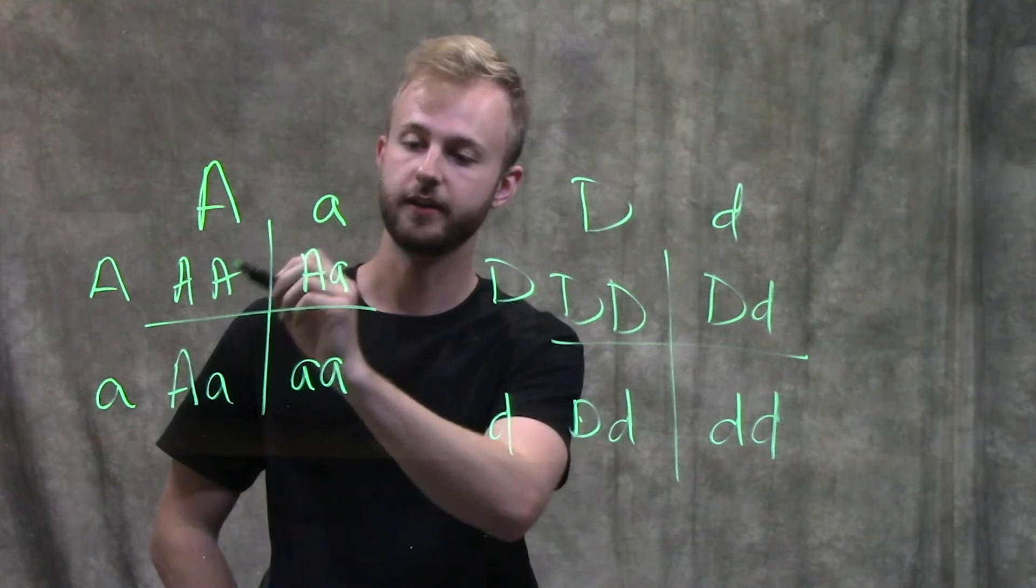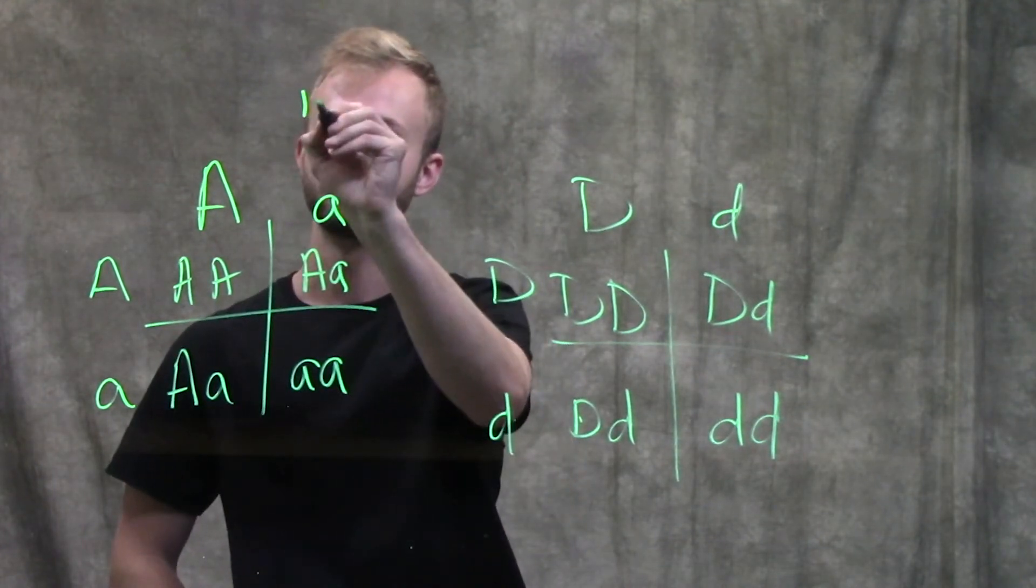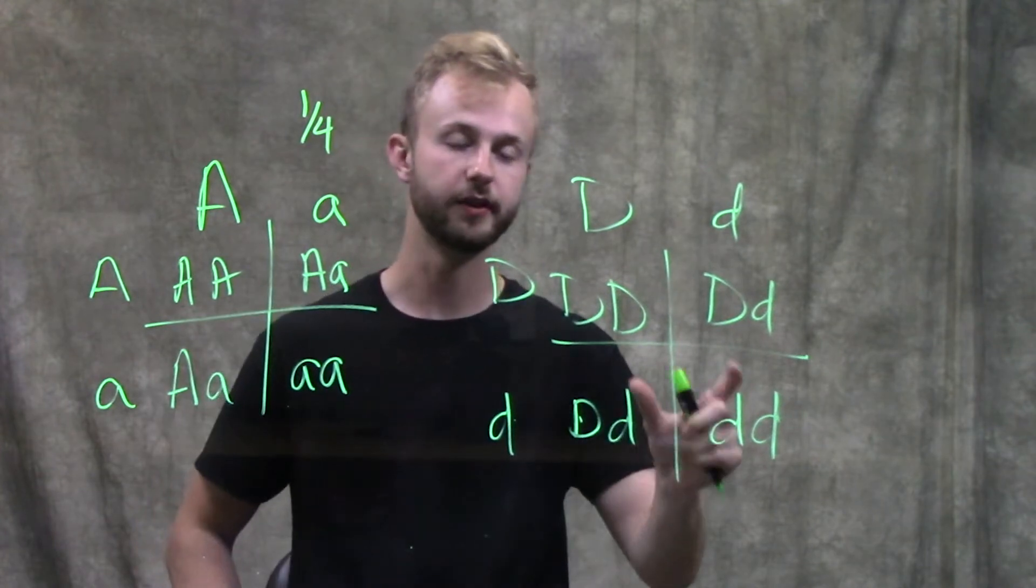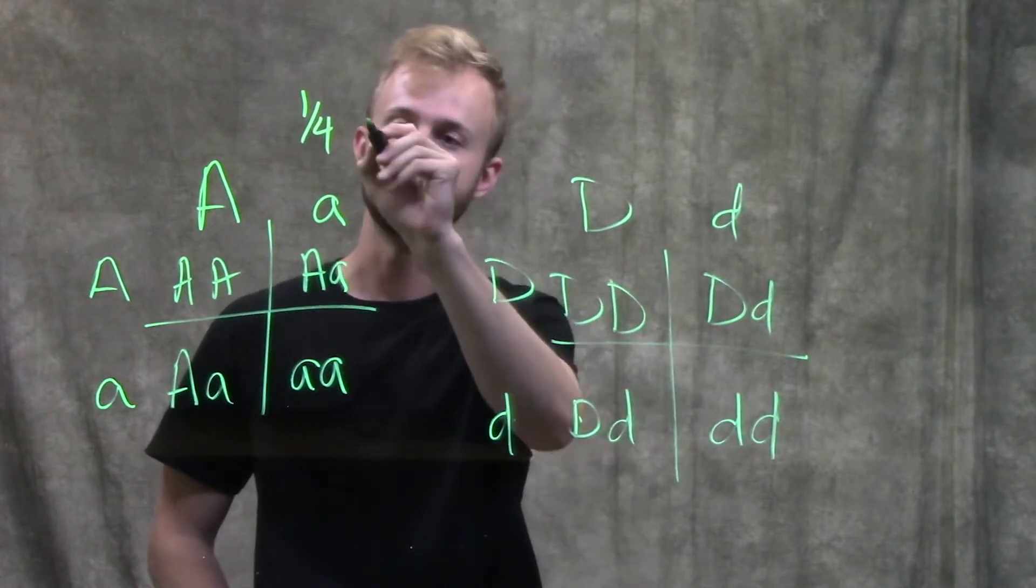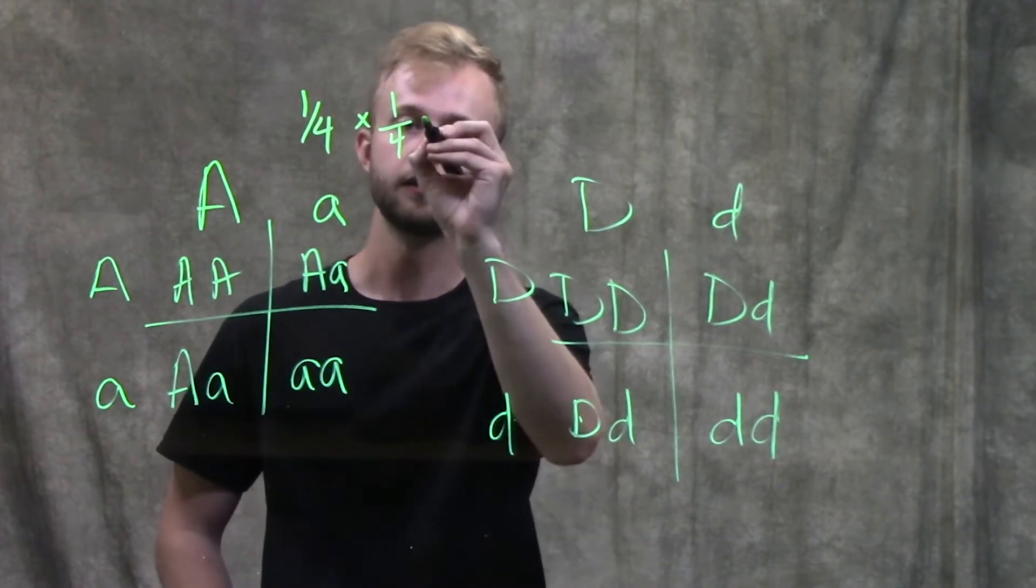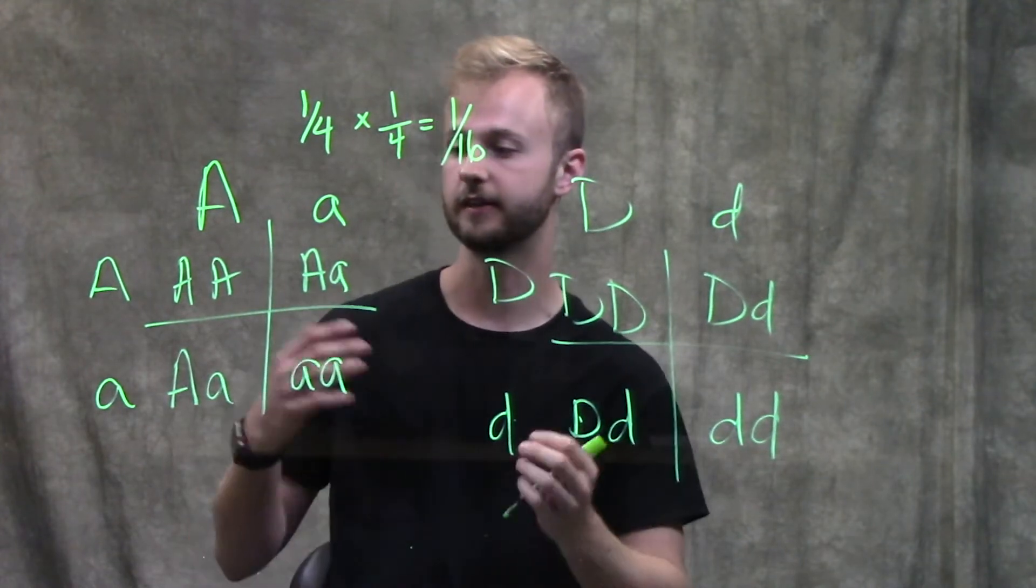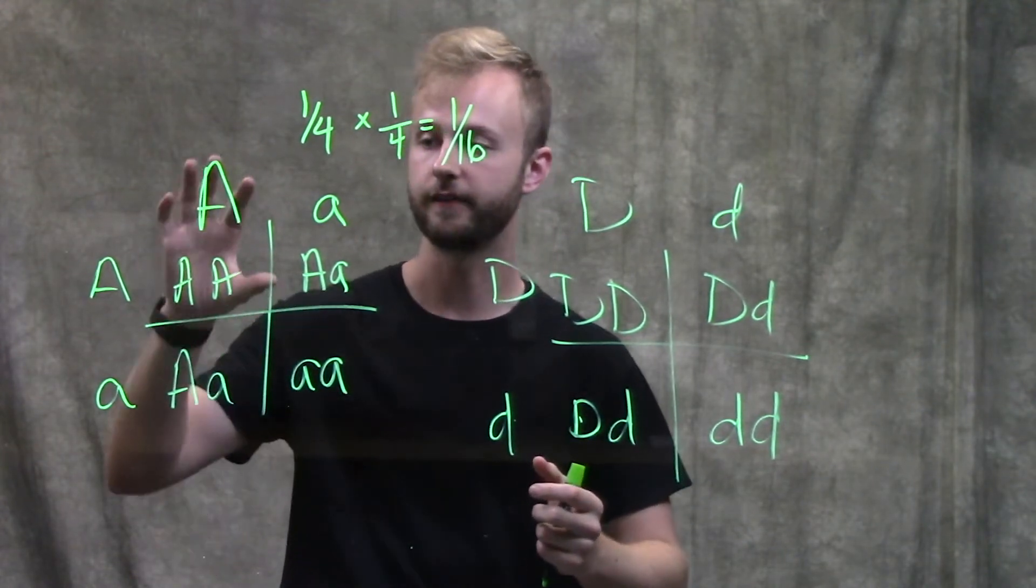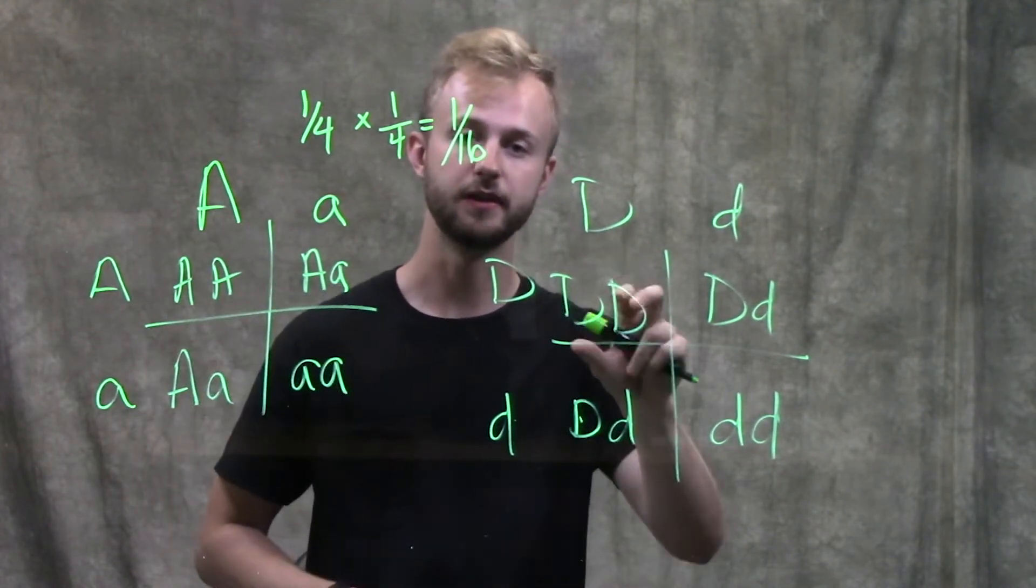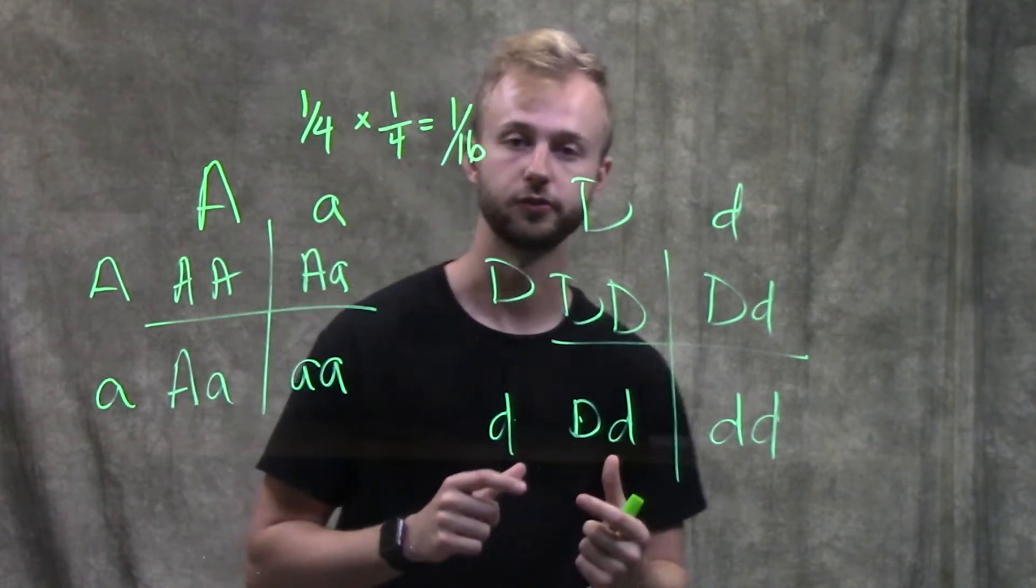The probability of having a big A, big A genotype is one-fourth. The probability of having a big D, big D genotype is one-fourth. When we multiply that together, we get one-sixteenth. That's the probability that this individual is going to have big A, big A and big D, big D. We know to use the multiplication rule because it has the word 'and.'